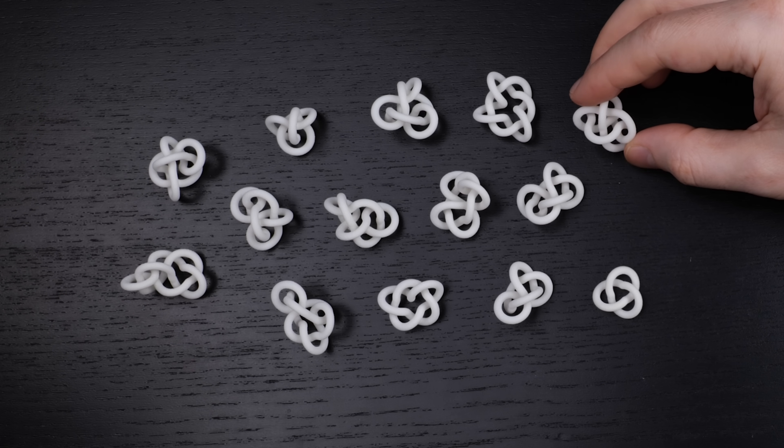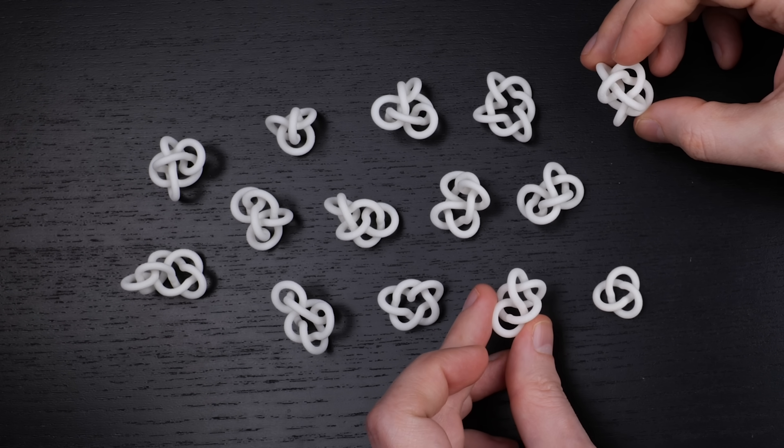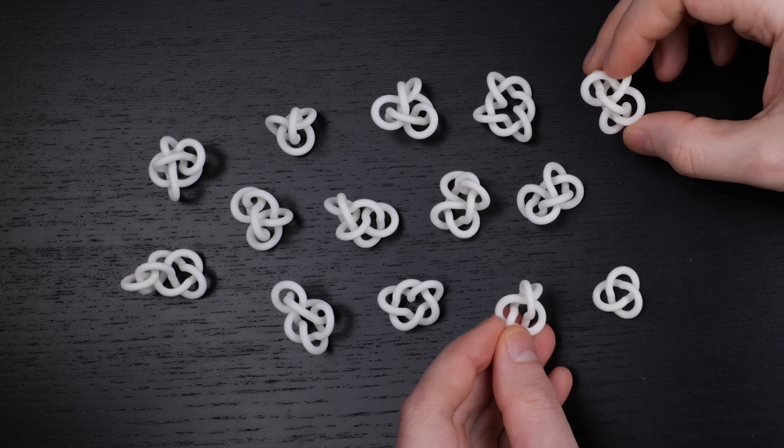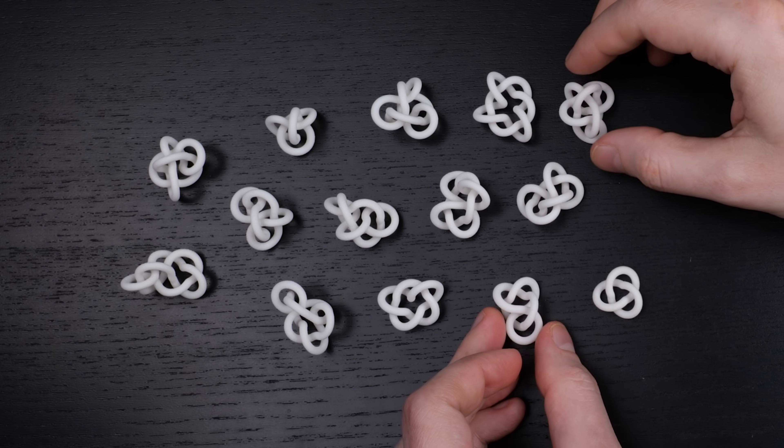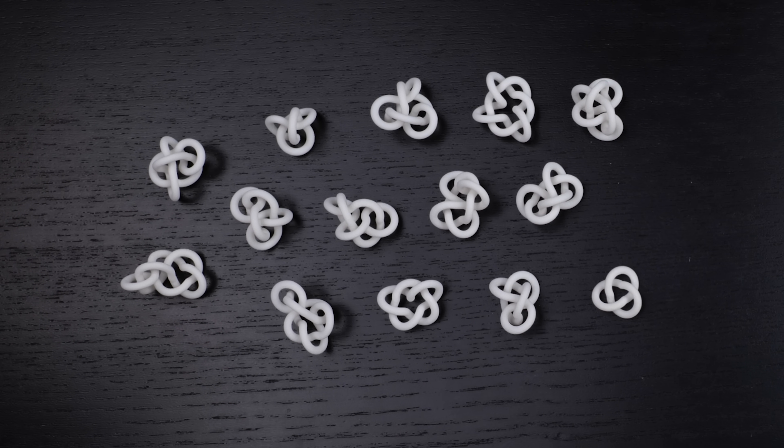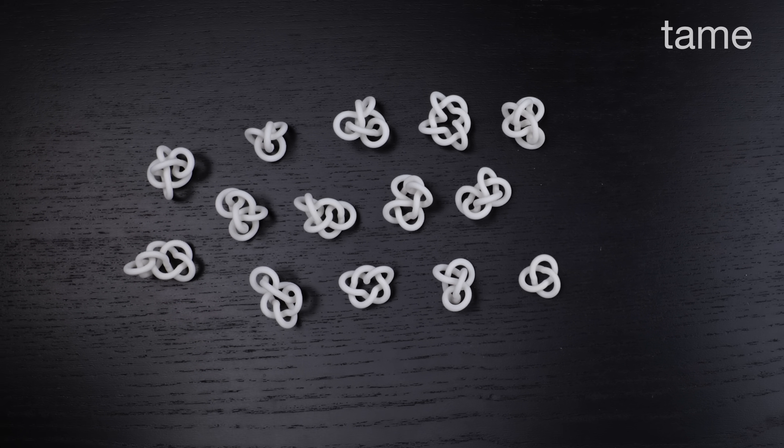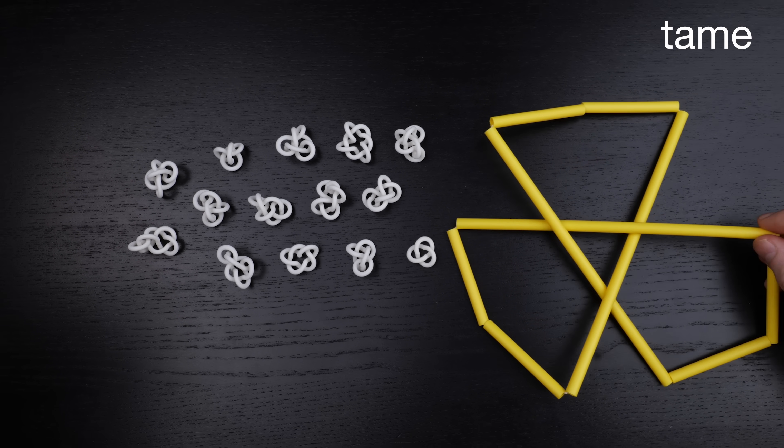In fact there are infinitely many knots that are all really different, meaning that you cannot deform one into another, although again showing that they're really different from each other isn't so easy. All of these knots are tame, which means that they can be deformed into polygonal loops.